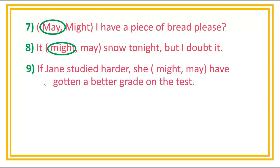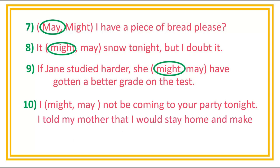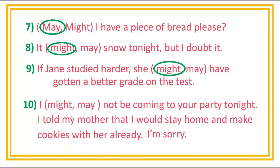Number 9: If Jane studied harder, she might/may have gotten a better grade on the test. Answer is might. Number 10 — last item: I might/may not be coming to your party tonight. I told my mother that I would stay home and make cookies with her already. I'm sorry. Answer is may.